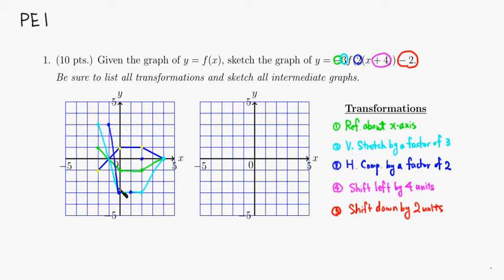For the fourth transformation, shift the whole graph left by four units. This point goes one, two, three, four units to the left — it goes there. Same for this point, and this point, and this point — each moves four units to the left. So you have a picture which looks like this.